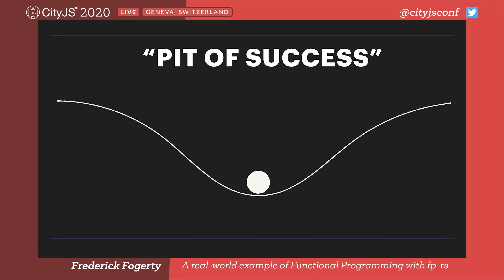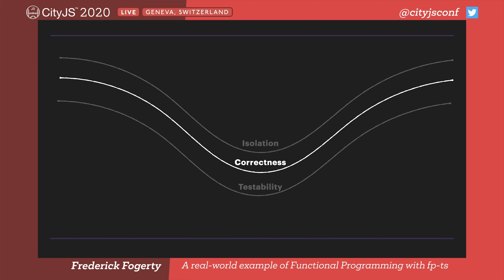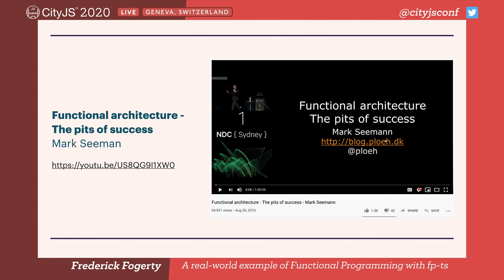A term that is thrown around a lot in the industry is 'pit of success,' and functional programming is commonly seen as one of many pits of success. Basically, by writing your code in a functional style using a functional framework like fp-ts, you don't really have to do much effort to make your ball roll down into the pit, and you end up with a better program without having to do too much work. I like to think of there being three pits of success: isolation, correctness, and testability. In this talk I'm going to give you an understanding of how the correctness pit of success is relevant, but for the others I recommend you go watch the talk by Mark Seaman called 'The Pits of Success' — it's an hour long and well worth the time.